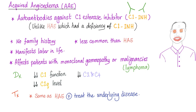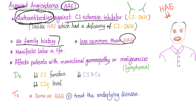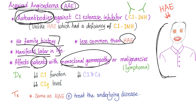Welcome to today's topic: acquired angioedema. It's acquired, so it's not a genetic problem. There are autoantibodies against C1-esterase inhibitor. In hereditary angioedema, we had a genetic deficiency of C1-esterase inhibitor; in acquired angioedema, we have autoantibodies against it. No family history, because it's not hereditary. It's less common than hereditary angioedema and manifests later in life.